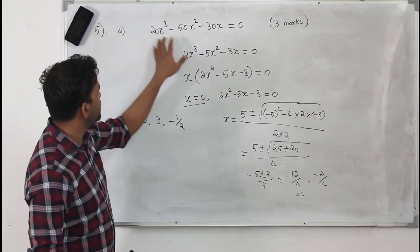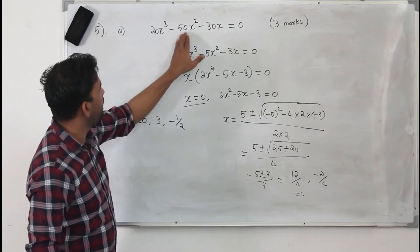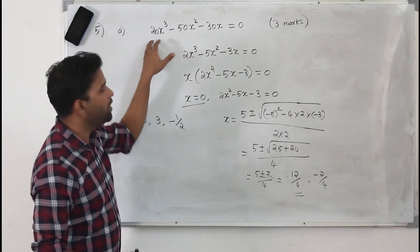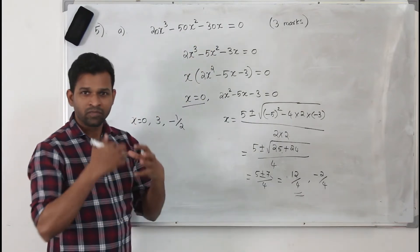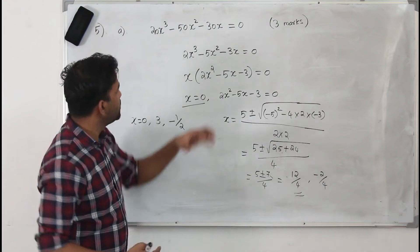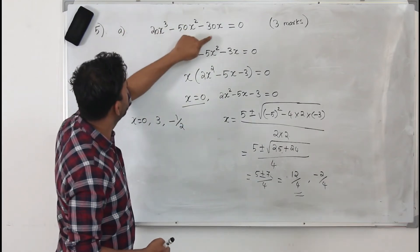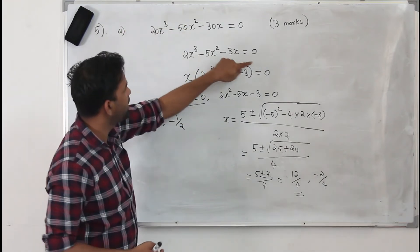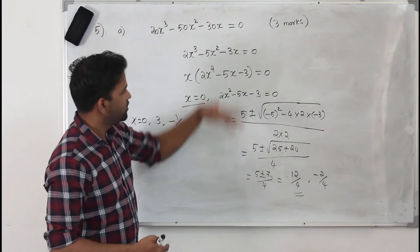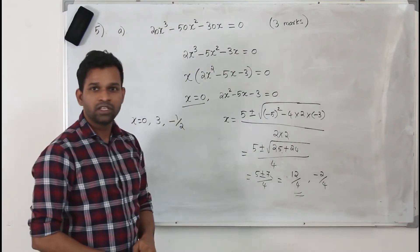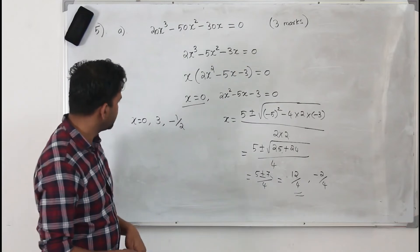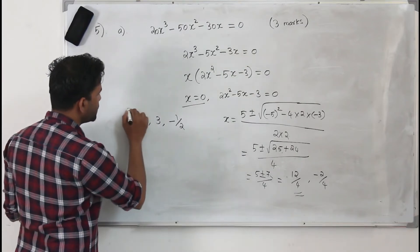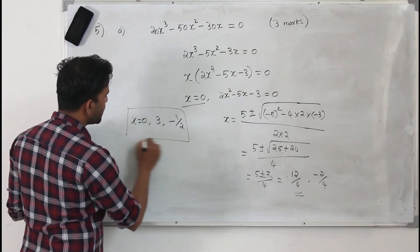The first step: always look for a common factor. The moment you see bigger numbers, try to reduce it — try to look for a common factor. Here 10 is a common factor, divide by 10, which will make your life much easier. So you got three solutions in part A.